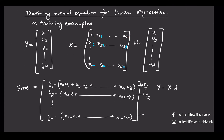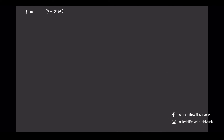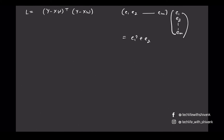Let's say the errors corresponding to m training examples are e1, e2, ..., em. The total loss we want to minimize is e1 squared plus e2 squared and so on. We denote this loss by capital L. We can see that L can be written in the form of (Y - XW) transpose times (Y - XW), because once we transpose the error vector and multiply by itself we get e1² + e2² + ... + em². We want to minimize these squared error losses.